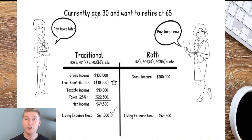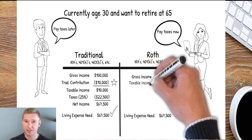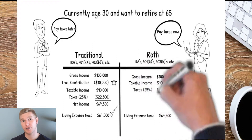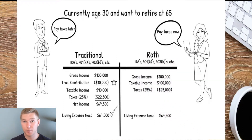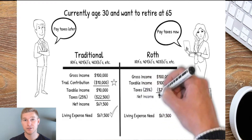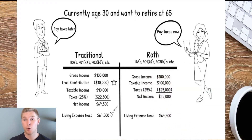Rachel also makes a gross income of $100,000, but because she's contributing to a Roth she does not get any tax deductions today, so her taxable income remains at $100,000. She pays 25% tax just like Tom, but her tax bill is $25,000 — $2,500 more than Tom's — leaving her net income at $75,000.